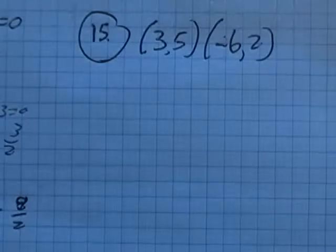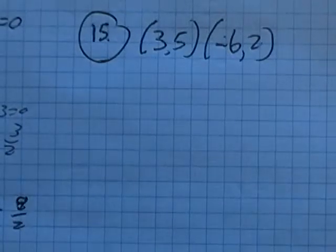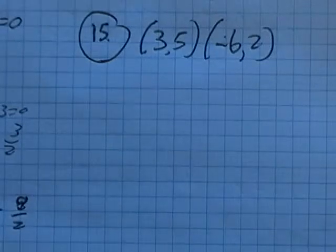Final practice for Math 98, problem number 15. We have been asked to find the equation of the line that goes through these two points.